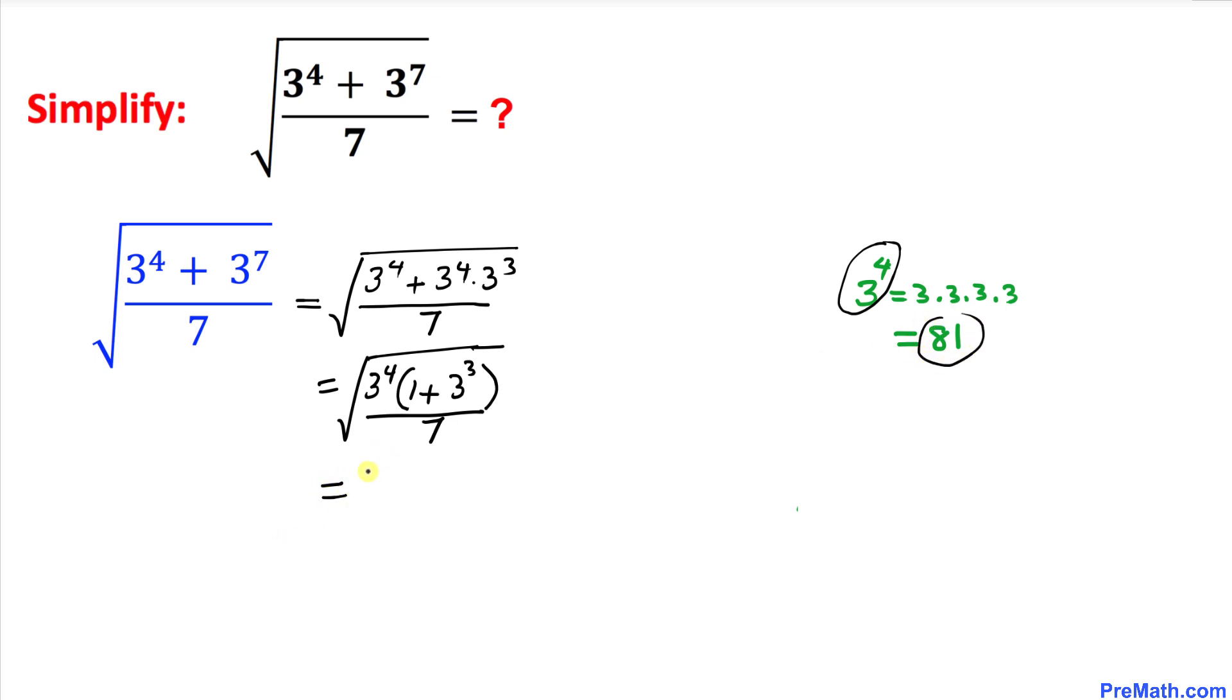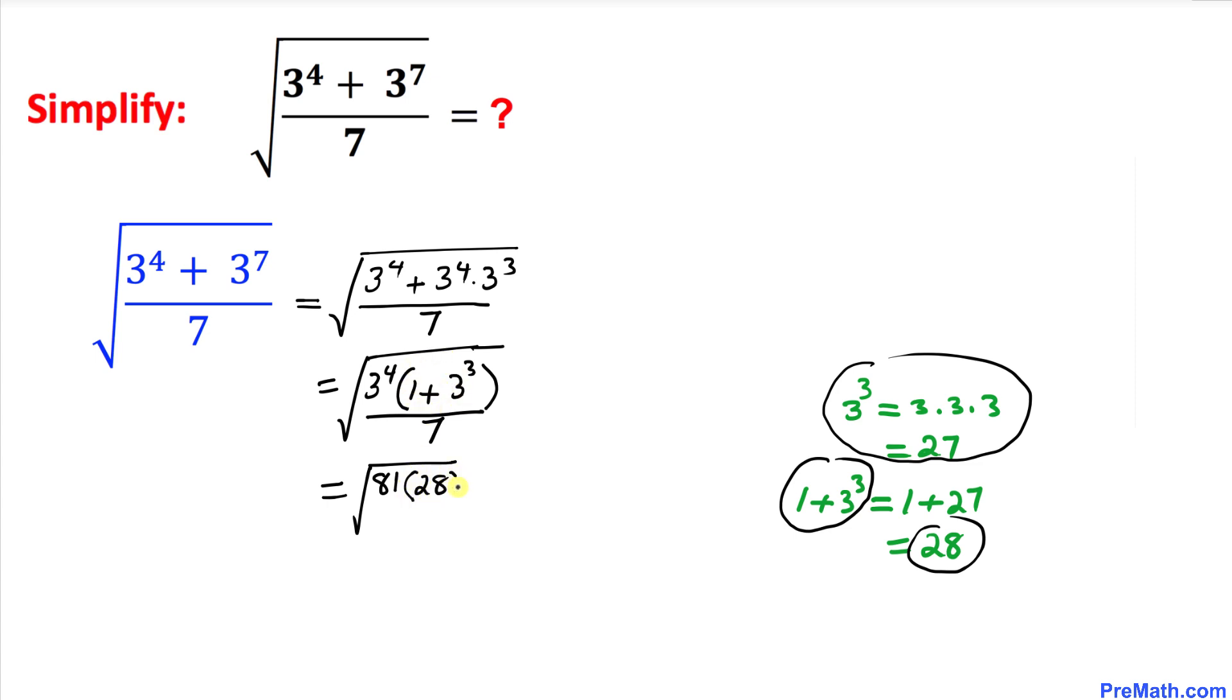Now let's focus on this part inside this parentheses. I have just copied it down over here. We know that 3 power 3 is 27, so 1 plus 3 power 3 is going to become 1 plus 27, which is 28. So I can replace this by 28 divided by 7.